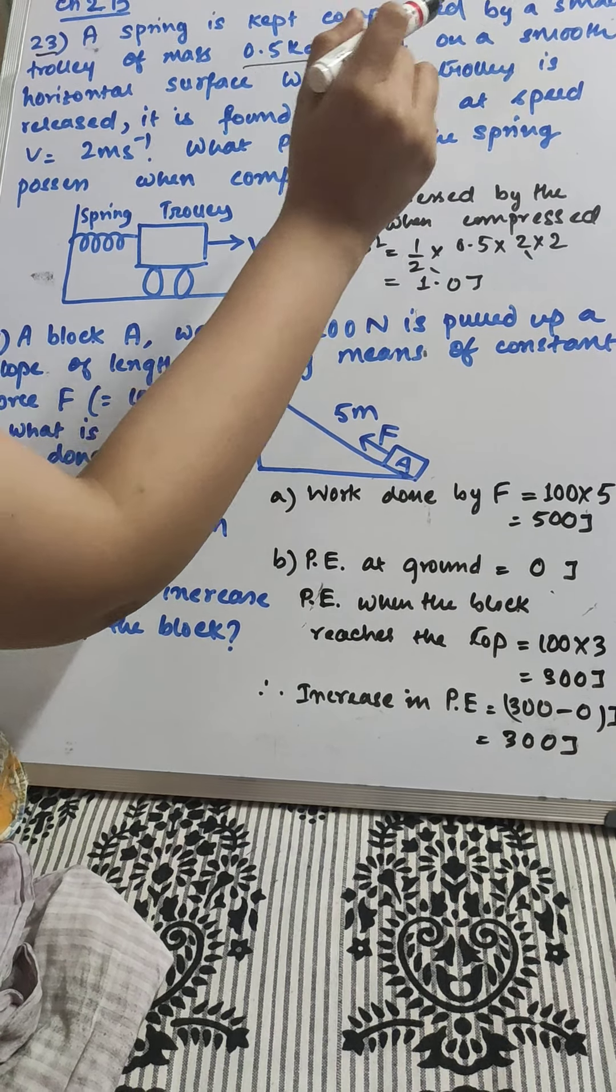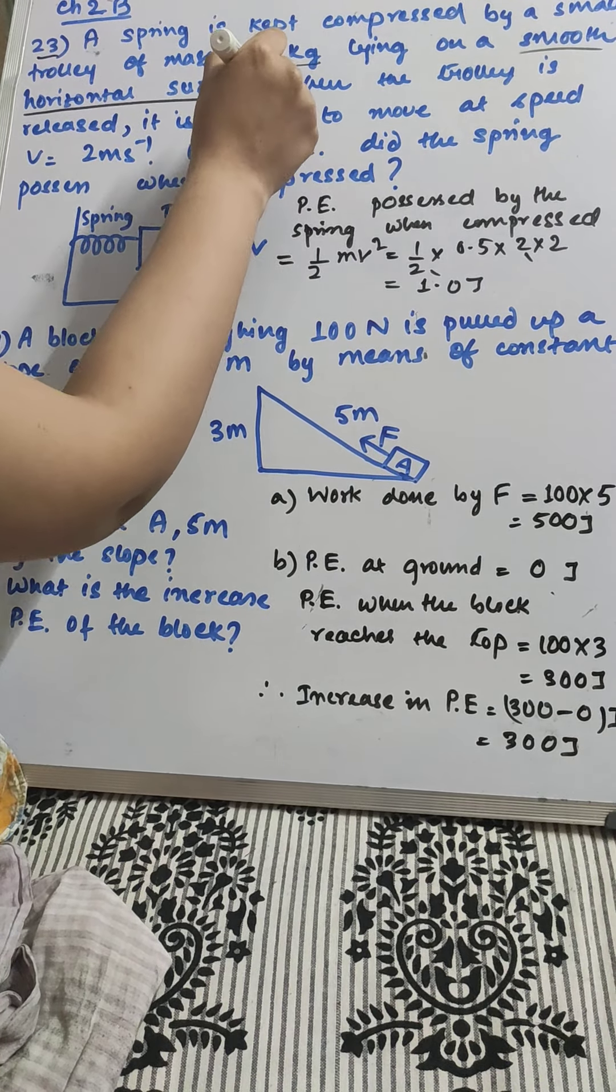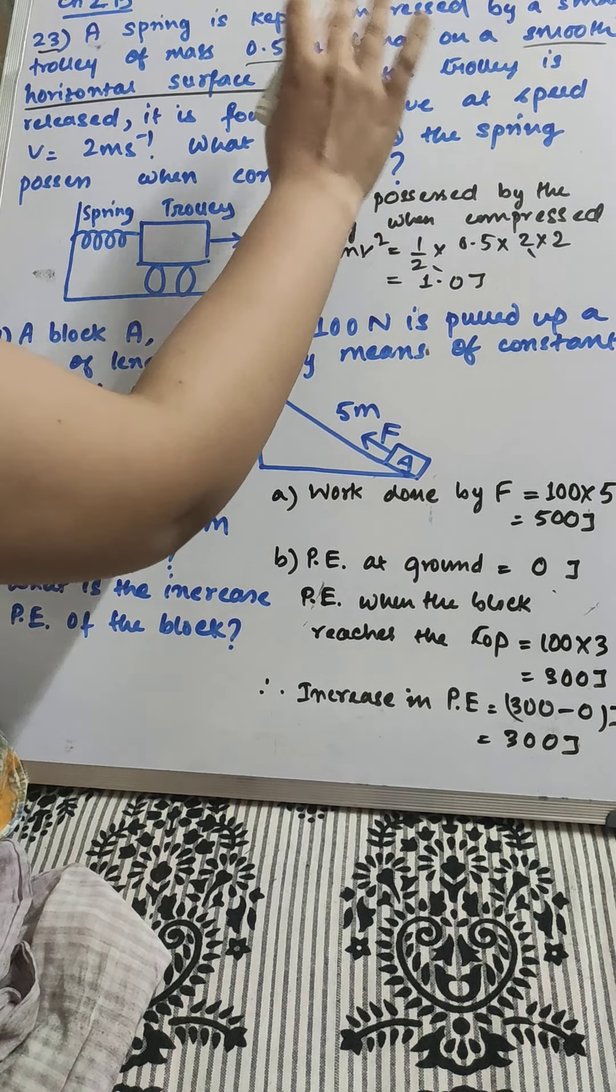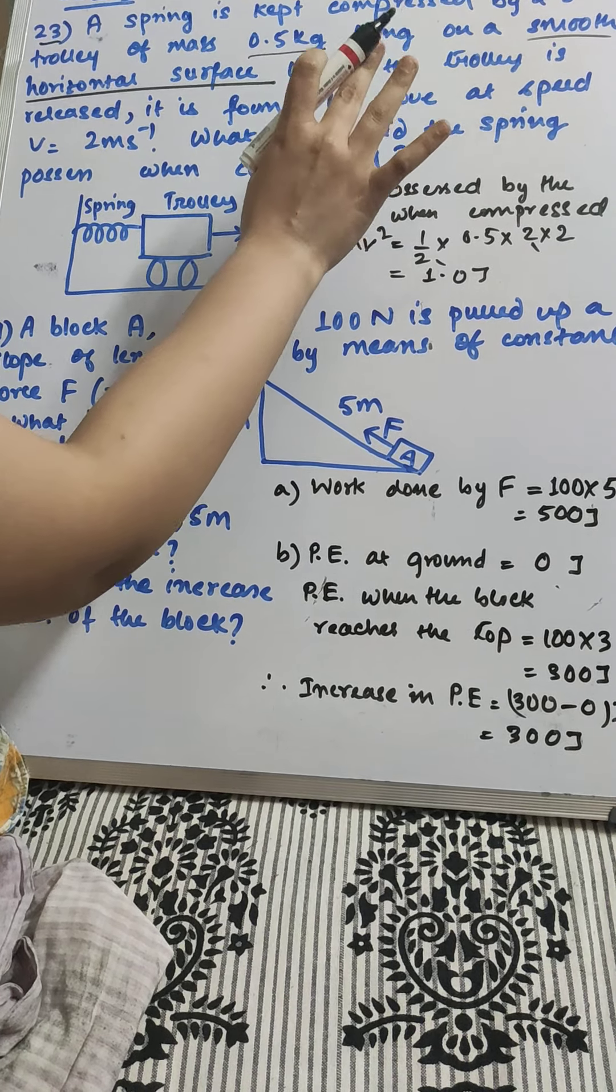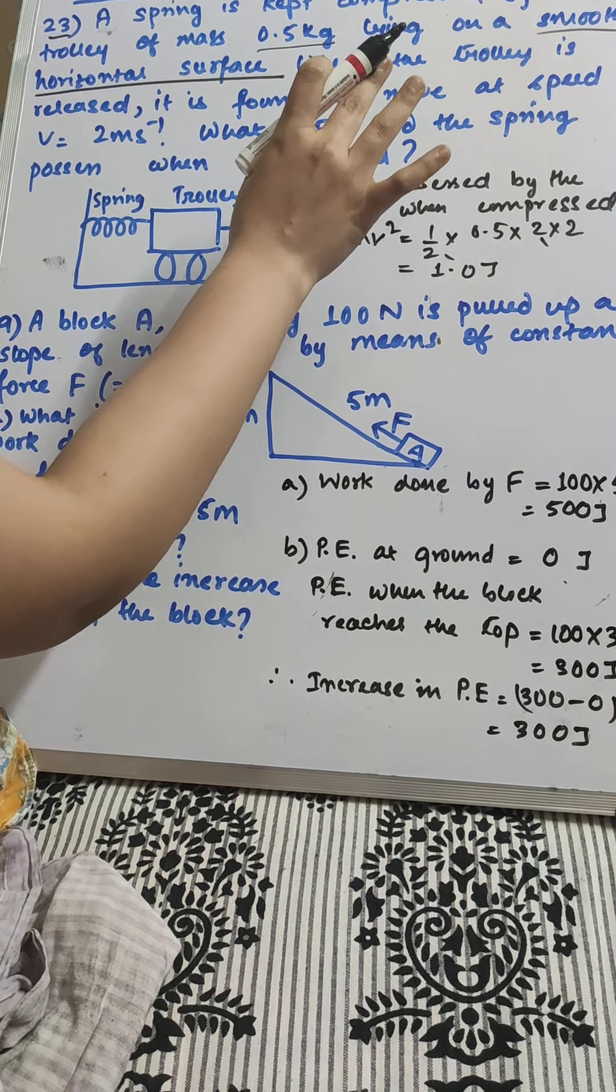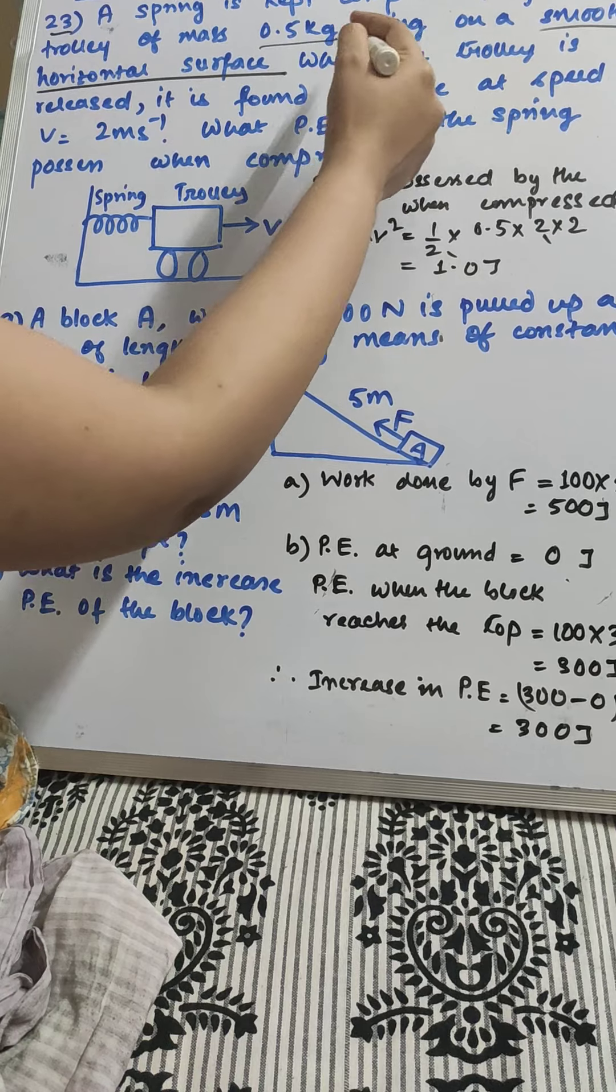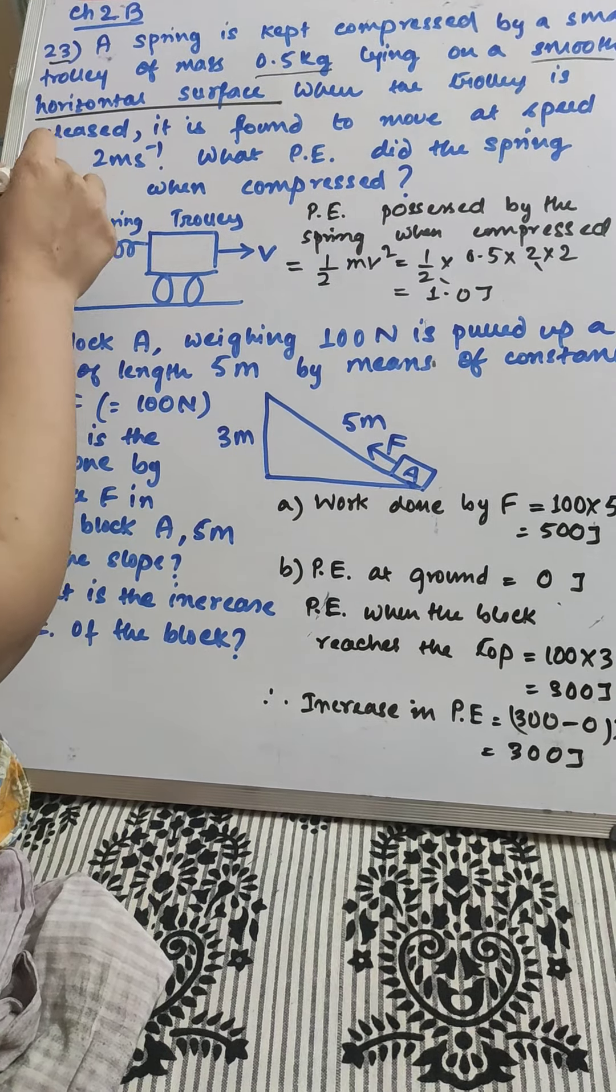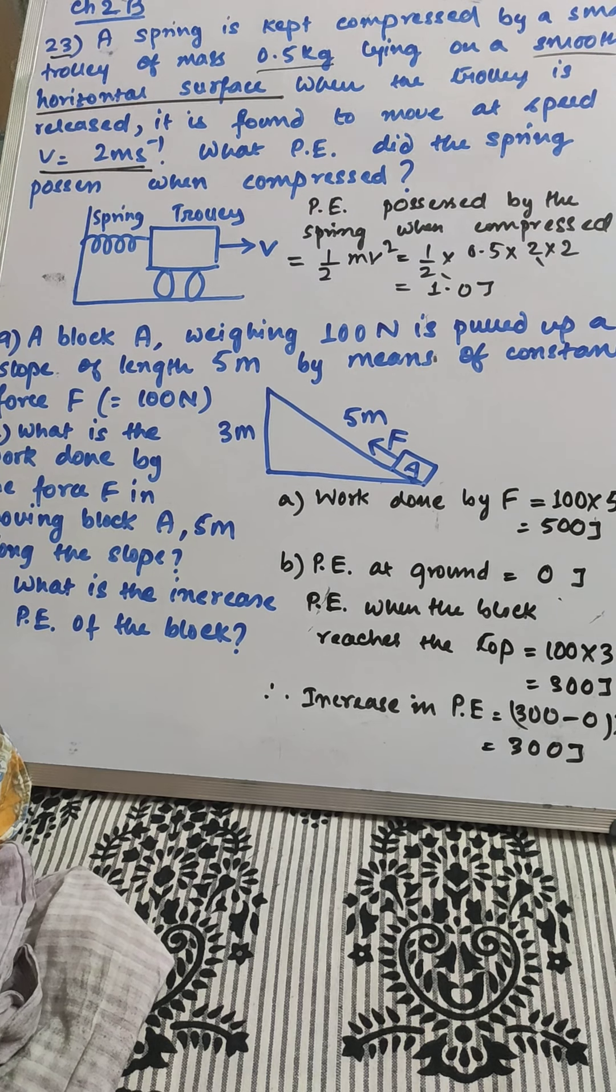The significance of this smooth horizontal surface is that you have to ignore friction. When the trolley is released, it is found to move at speed v equal to 2 meter per second.